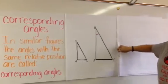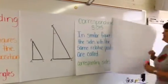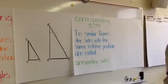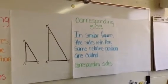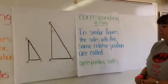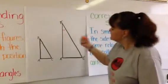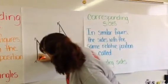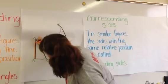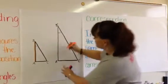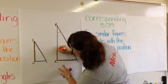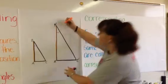We also have corresponding sides. These are the sides that have the relative position the same. So, we have side AB, which corresponds to side A'B'.